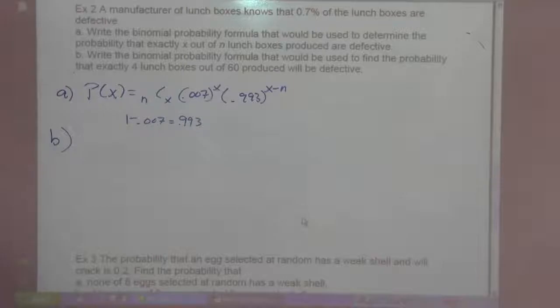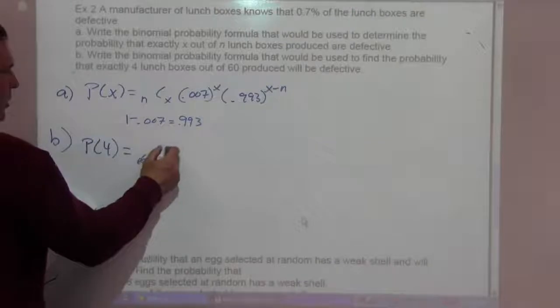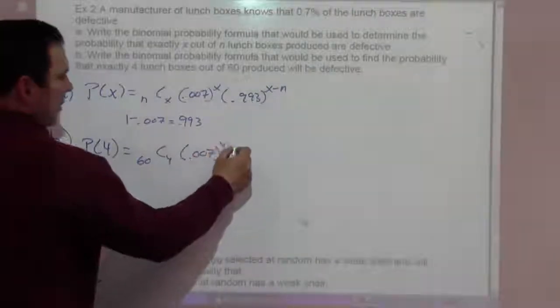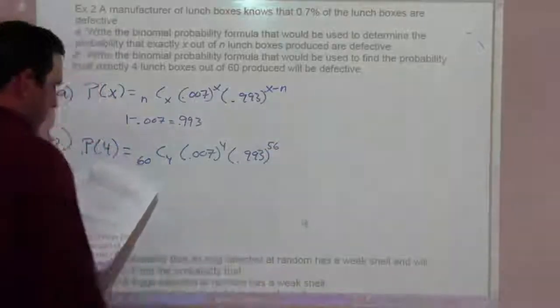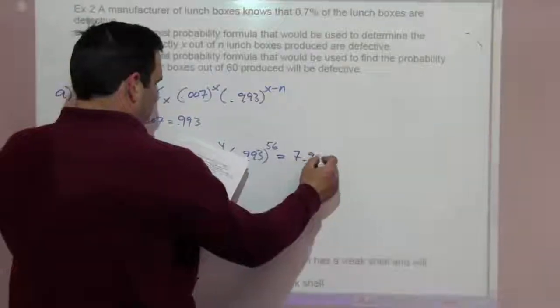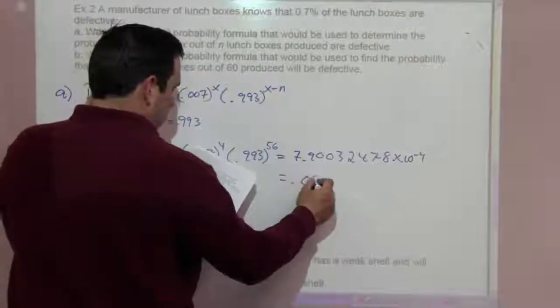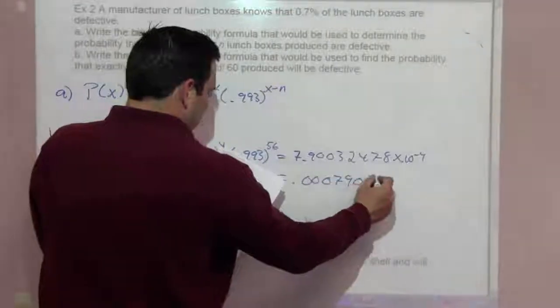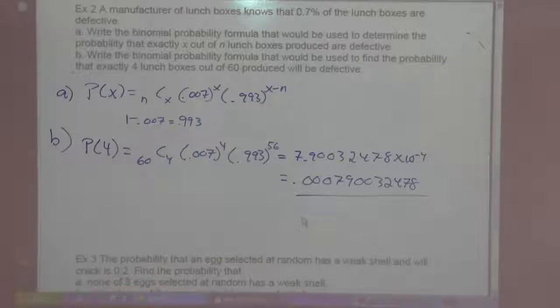Part B says write the binomial probability formula that would be used to find the probability that exactly four lunchboxes out of 60 would be defective. So P of four is 60 choose four times .007 to the fourth power times .993 to the 56 power. That gives us 7.90032478 times 10 to the negative 4 or .000790032478. Very unlikely. Feel free to pause that, I'm going to go to the next one.